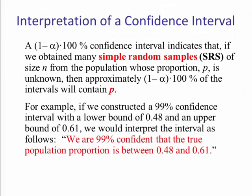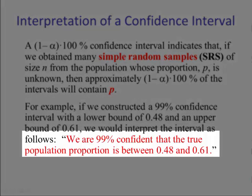Now what does that really mean? Well, it means if we were to construct a 99% confidence interval with the lower bound of 0.48 and an upper bound of 0.61, we would interpret the interval as this: We are 99% confident that the true population proportion is between 0.48 and 0.61.